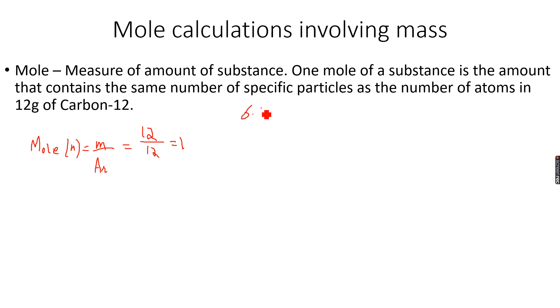So this is what one mole contains. And now if you read the definition of the mole it will be more clear to you. One mole of a substance is the amount that contains the same number of specific particles, which can be atoms, molecules, or ions, as the number of atoms in 12 grams of carbon-12.